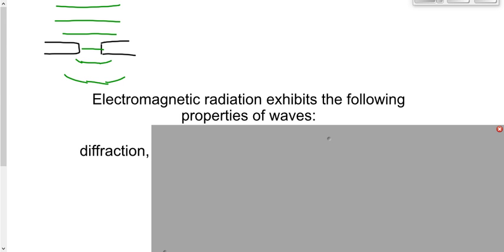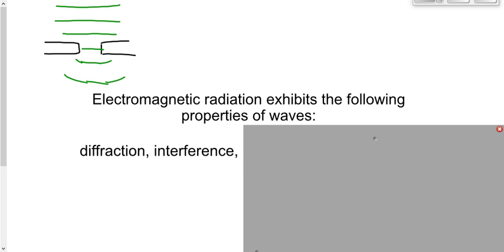Another wave property exhibited by EMR is interference. Interference is the phenomenon that occurs when two waves encounter each other at the same time. If you get a crest and a crest together, it makes a really big crest — that's constructive interference. If you have a crest and a trough, they cancel out — that's destructive interference. Interference is a wave property exhibited by EMR. Later in this unit you'll see a demonstration where light can actually cancel each other out and you get darkness — destructive interference — or brighter light from constructive interference.